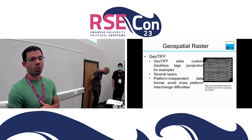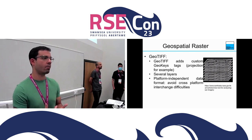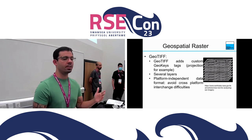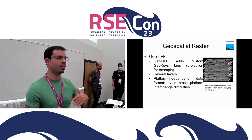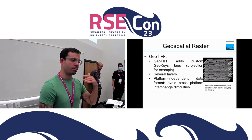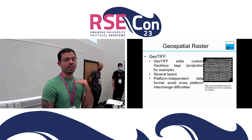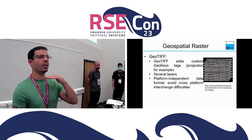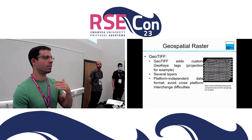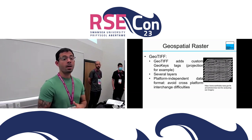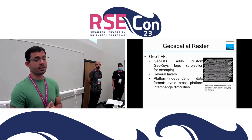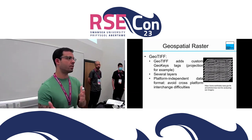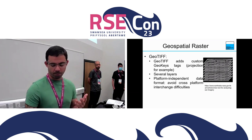We can also have several layers in the GeoTIFF file. So instead of only RGB, we can have more than 10, 12, or however many layers you want to use. Each layer can represent a different type of dataset, for example different bands of your satellite. A wonderful thing about GeoTIFF is that it's platform-independent, so you will not have difficulties working with this data format across different platforms.